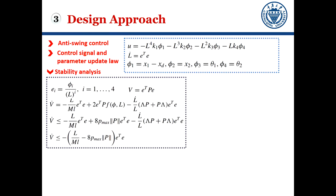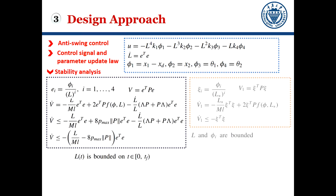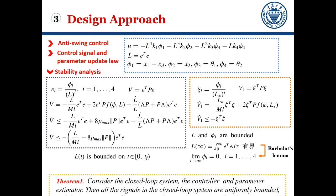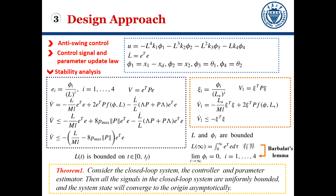In the stability analysis, EI is introduced to construct the Lyapunov function V. Invoking the parameter estimator for the load into the derivation of V, and according to certain contradictions, we obtain that V is bounded. ζ is also used to introduce another Lyapunov function V̄ to prove the boundedness of φ. It is derived from Barbalat's lemma that φ tends to zero as time goes to infinity, which results in Theorem 1: considering the closed-loop system, the controller and parameter estimator ensure all signals in the closed-loop system are uniformly bounded, and the system state converges to the origin asymptotically.